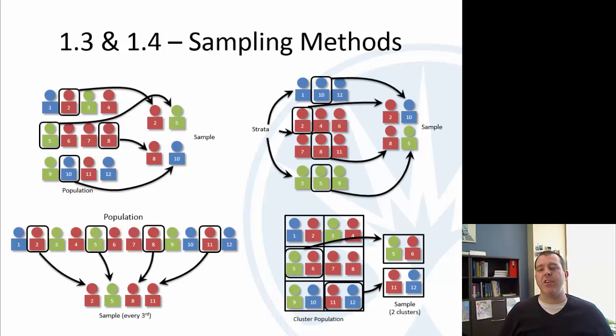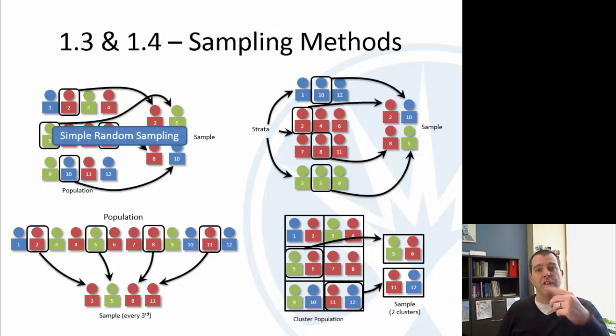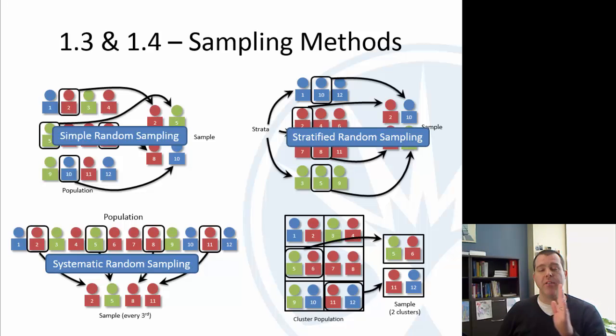So, let's summarize these strategies here. We have the simple random sample where we have our population and just randomly choose four of them with a random number generator or drawing numbers from a hat. We have stratified where the individuals are sorted according to some criteria. We have systematic where the individuals are already in line and we're choosing every third or every fifth or whatever the situation might be. And then we have cluster random sampling where the students or individuals are mixed together and we're choosing a certain number of clusters.